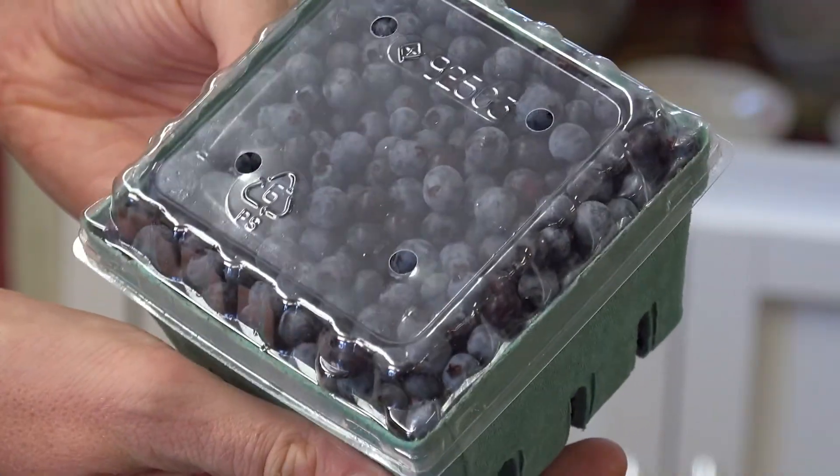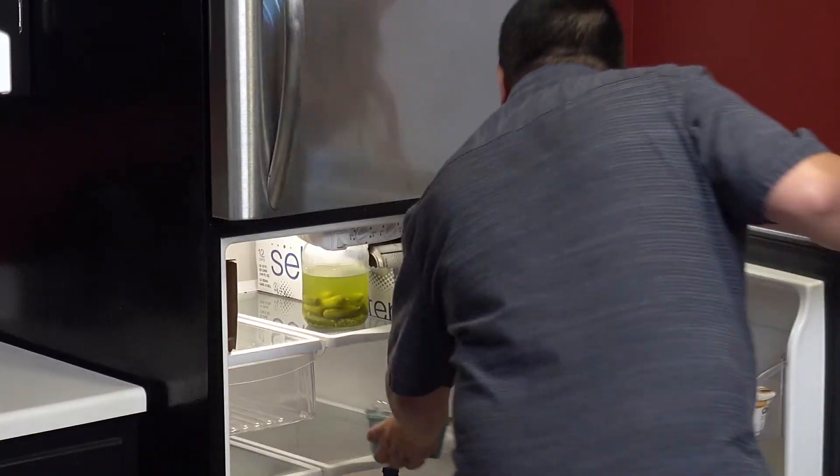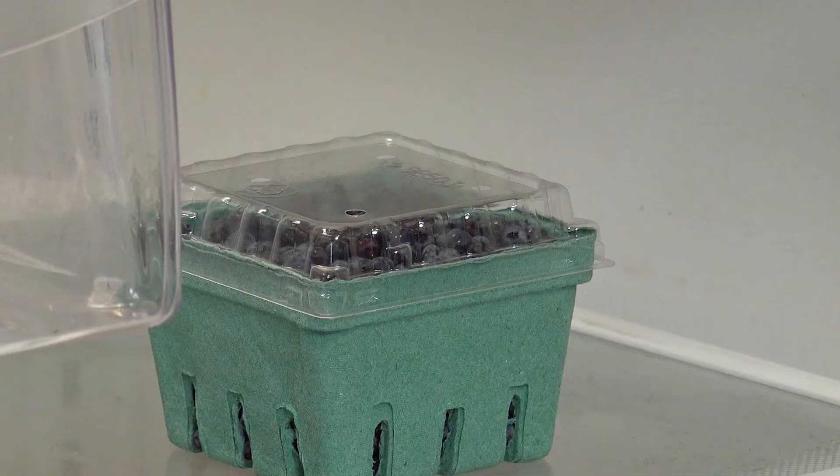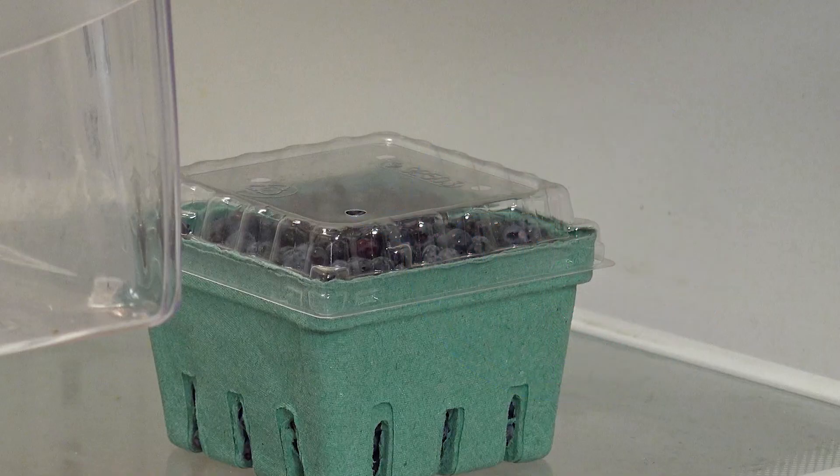To keep bacteria from multiplying, we can't let them stay in that comfortable temperature. That's why we put produce in the refrigerator. The lower the temperature, the slower the bacteria will multiply. And now, you know why it's so important to keep perishable food cold.